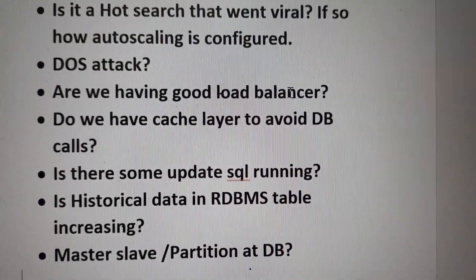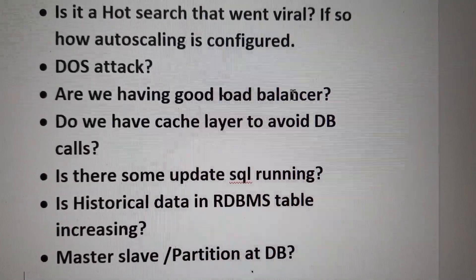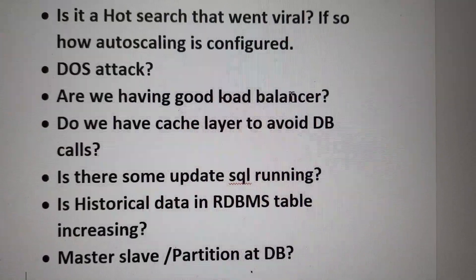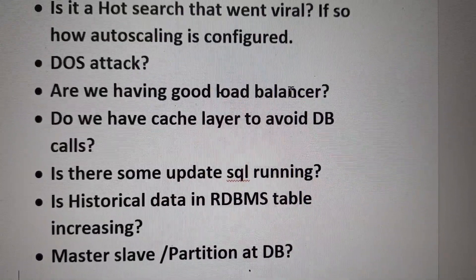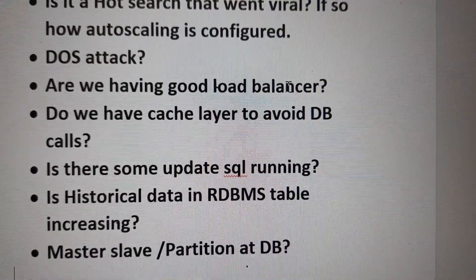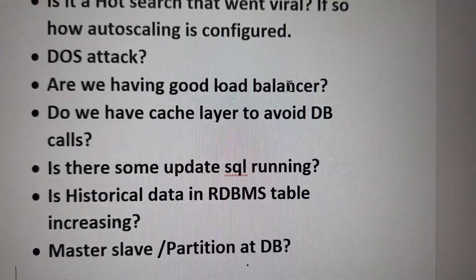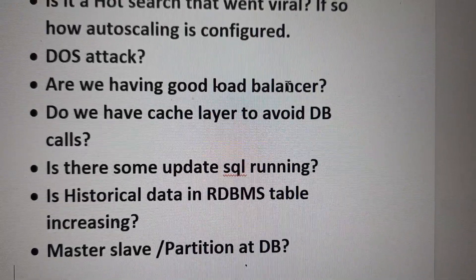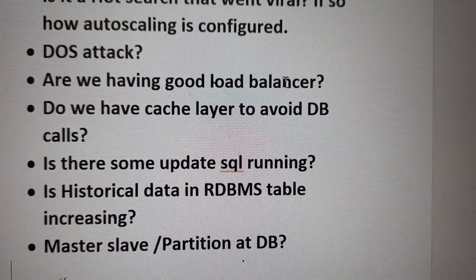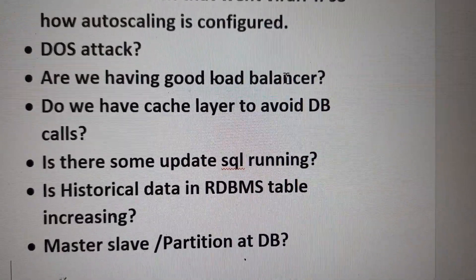Rate limiters are a solution for DoS attacks. They can be token bucket, leaky bucket, or queue-based — there are many utilities that can limit the number of requests per user, per server, per region, or per IP address. These can be installed to control the request rate.